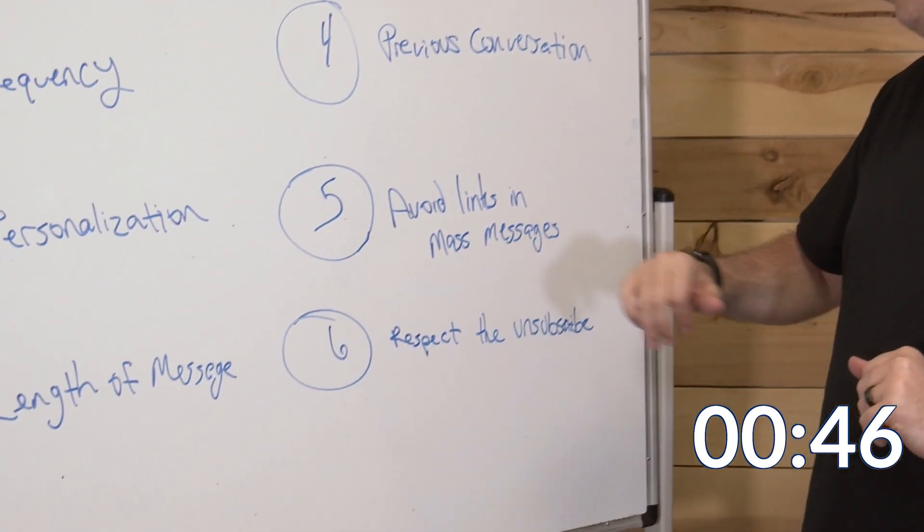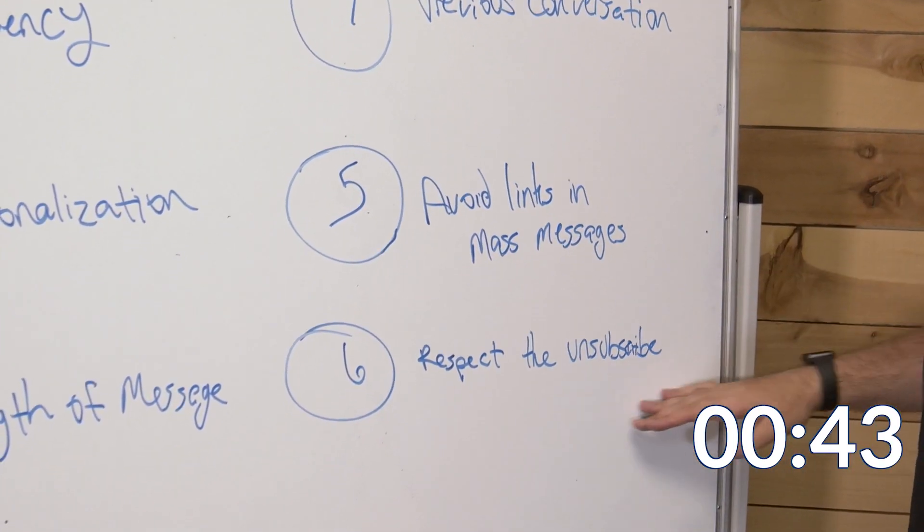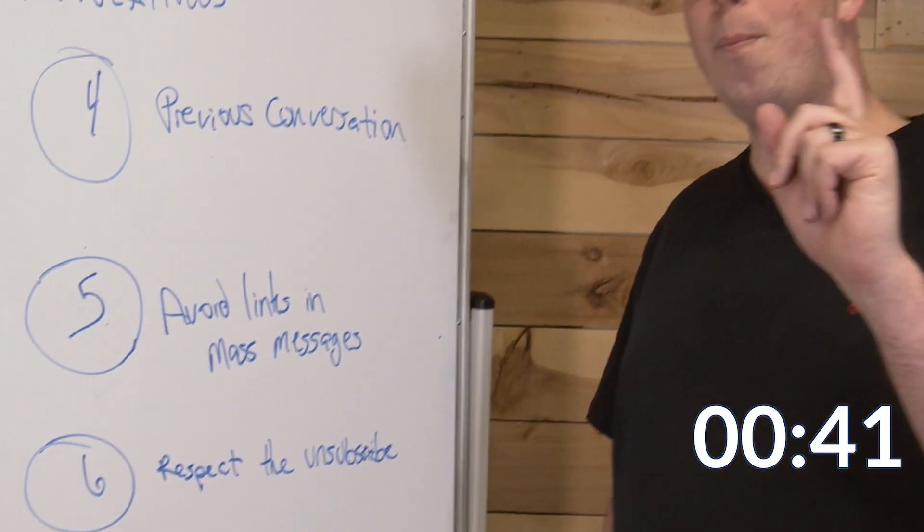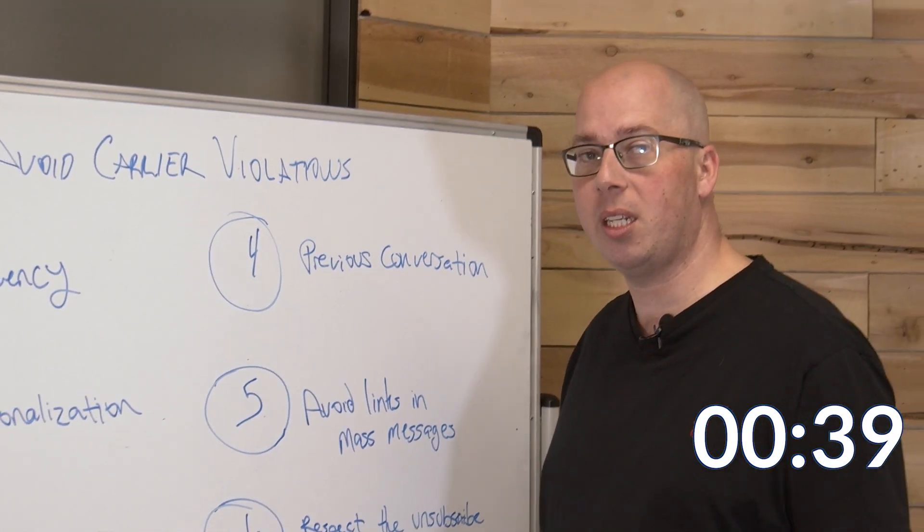Five and six, avoid links at all costs in mass messages and respect the unsubscribe. Do not manually add somebody back into your list if they reply stop.